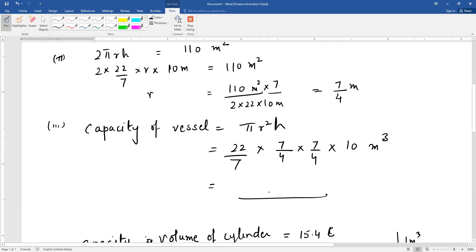The next question: Capacity of a closed cylindrical vessel of height 1 meter is 15.4 liters. How many square meters of metal would be required to make it? Square meters is an area unit, which means we need to find the total surface area when given the volume.